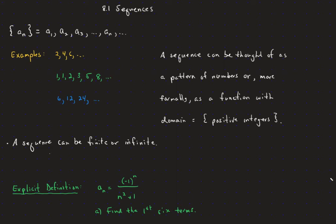In this video we're going to talk about sequences. We're going to use this notation — representing a sequence using braces. Different sequences will get different letters like a sub n, b sub n, or c sub n. What that means is we're going to get these different numbers in a pattern, in a list.